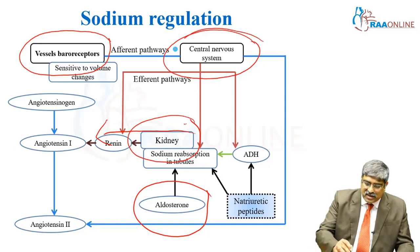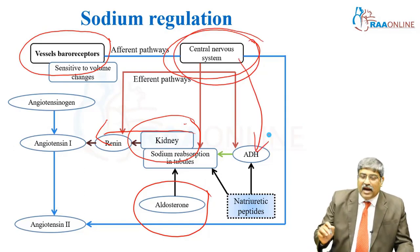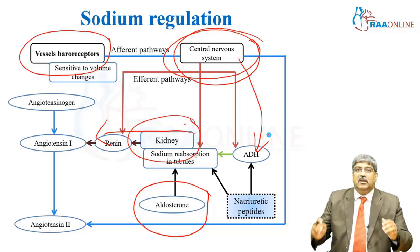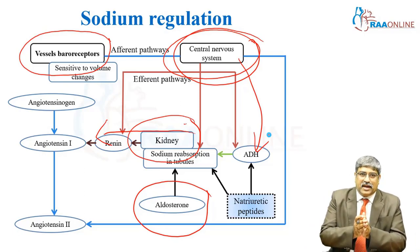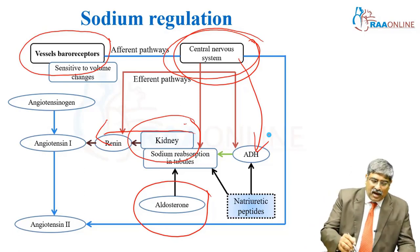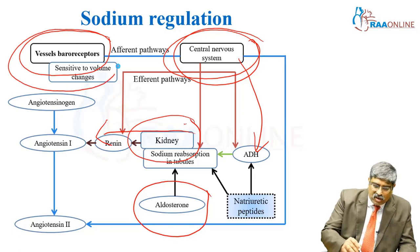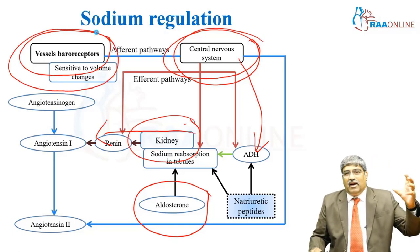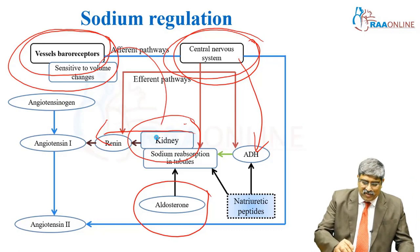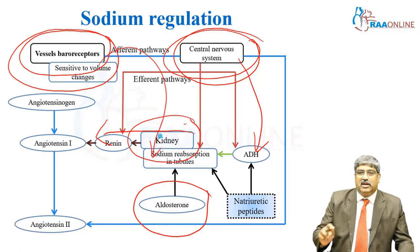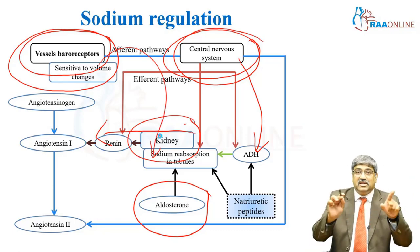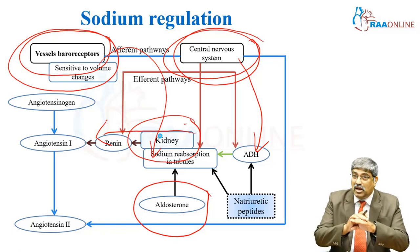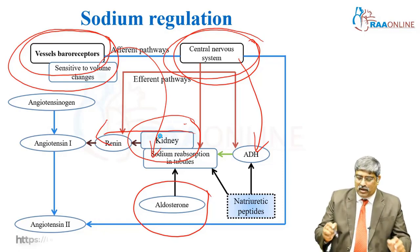From the central nervous system, you have the anti-diuretic hormone through arginine vasopressin. Sodium absorption can happen, and whenever there is a volume loss, your baroreceptors get stimulated and automatically it leads to a pathway where volume retention can happen. These are the various ways where sodium as well as volume is regulated.